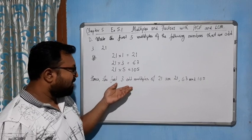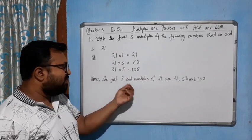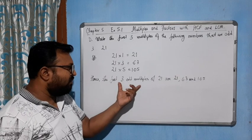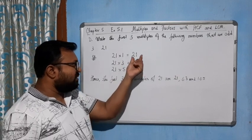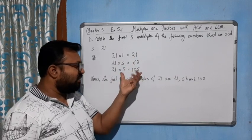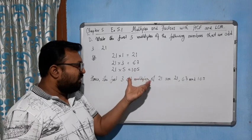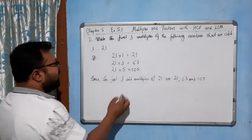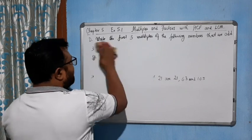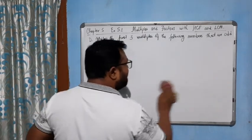So in this way you can find the first three odd multiples or four odd multiples or five odd multiples just by checking the number, checking the product whether it is even or odd number. You can write the answer. Now move to the next question.